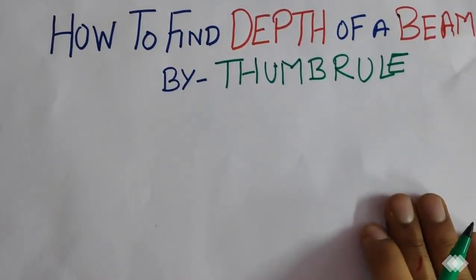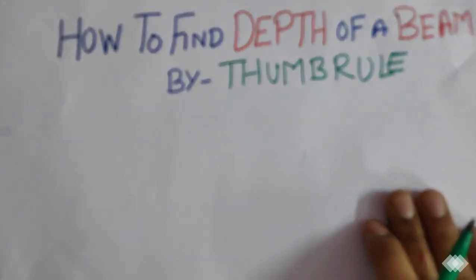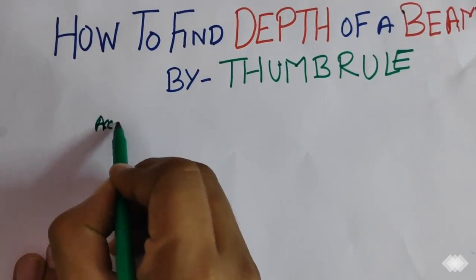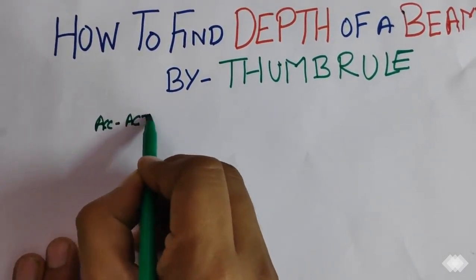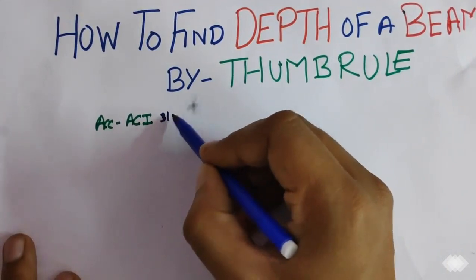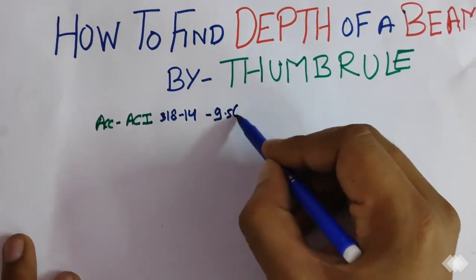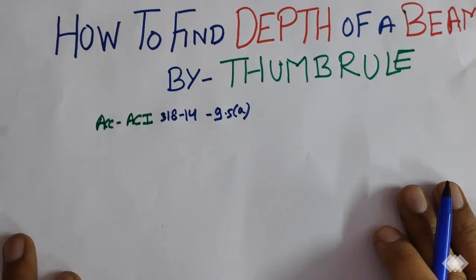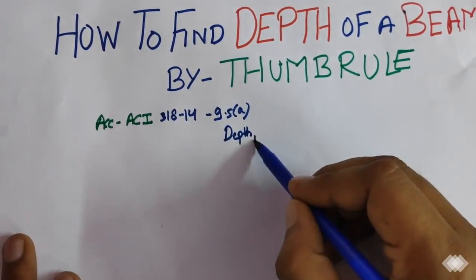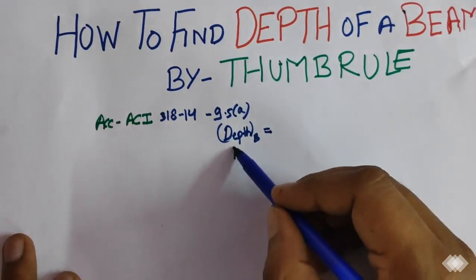Hello friends, today we will discuss how to find depth of a beam by thumb rule. This is a very important topic in civil engineering. According to American Code of Institute, that is ACI, states that 318-14-9.5(a), the depth of beam in inches...